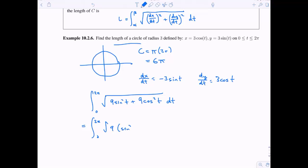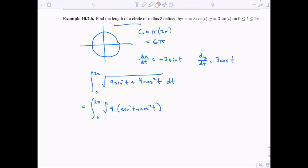And we should notice, well, this is the same thing as 9 times sine squared t plus cosine squared t. Well, sine squared t plus cosine squared t is the same thing as 1. How nice. So really this is just the integral from 0 to 2 pi of the square root of 9 dt, square root of 9 is just 3.